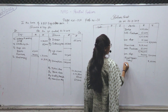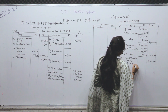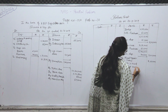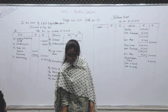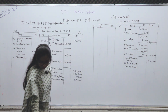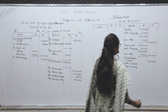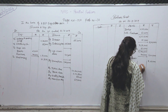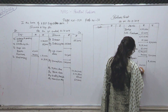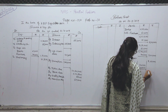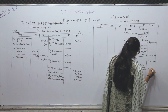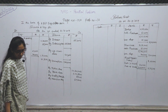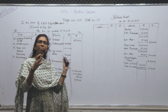Cash in hand — asset में लिखोगे। Cash at bank। Amount बताओ — 16,650 और 2,00,000 — दोनों का total: 2,16,650 — outer column।